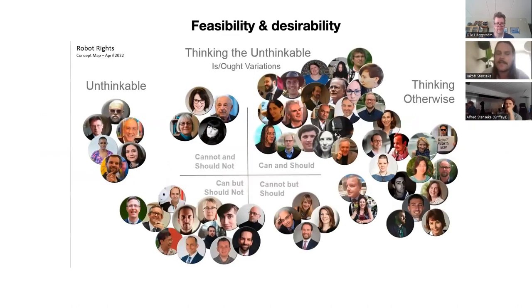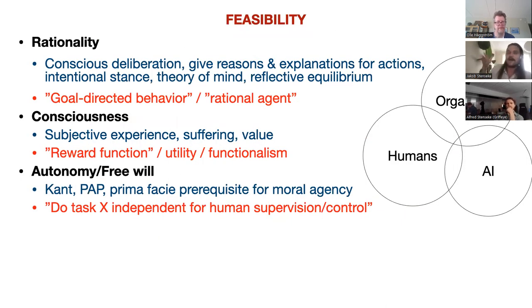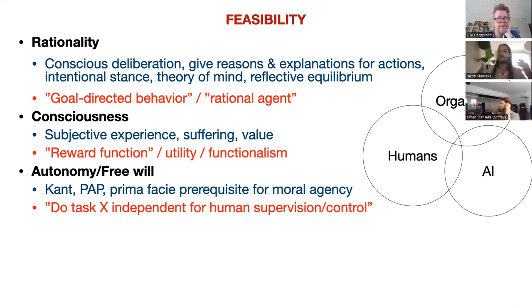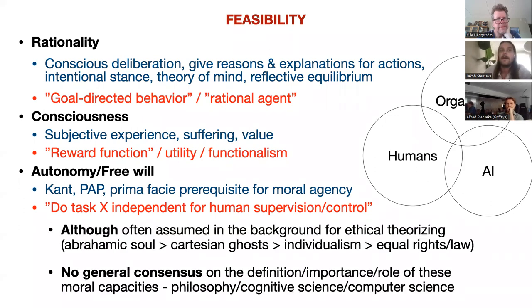For the feasibility and desirability questions, there's a whole inflated debate — this is a map showing all the different opinions on whether robots should have rights. These debates typically center around very human concepts such as rationality, consciousness, and autonomy, which play a major part in the Western history of self-understanding. You can think of Enlightenment ideas of a free autonomous citizen, or a Cartesian idea that plays into our Abrahamic tradition that we have a soul. This is usually the starting point for ethical discussions of human morality, but there's no good consensus or clean way of defining these moral capacities.